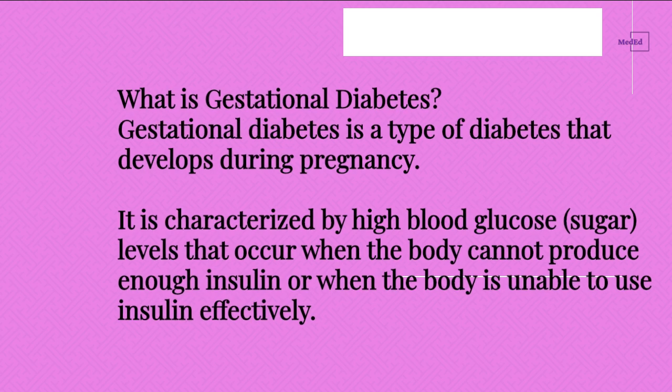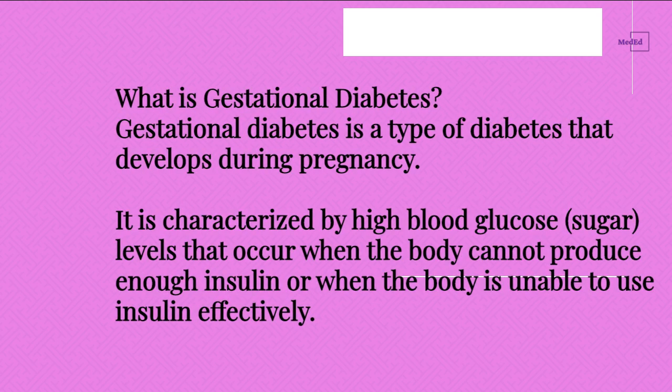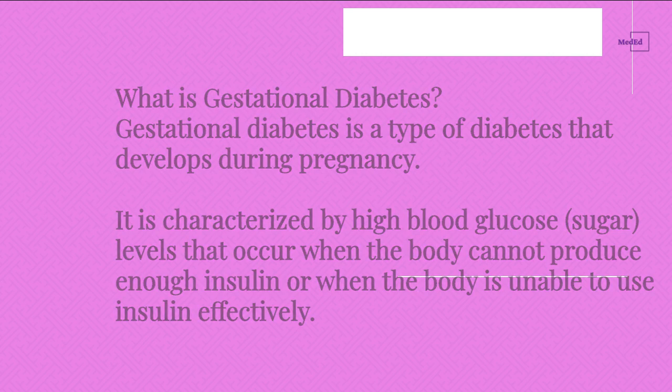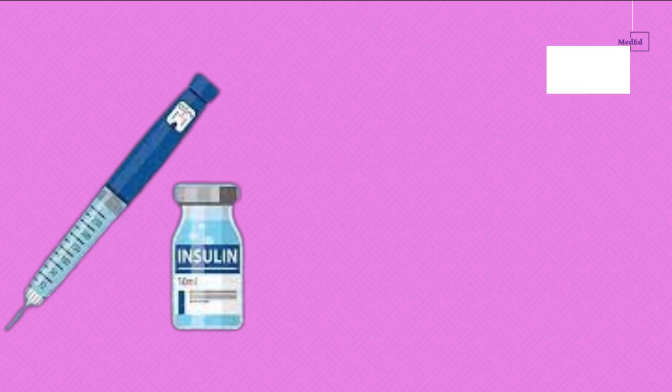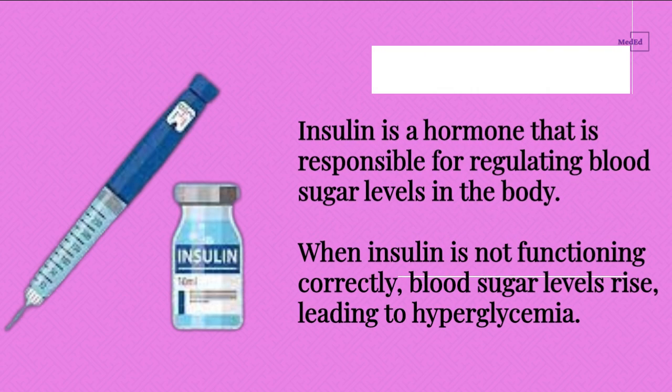What is Gestational Diabetes? Gestational diabetes is a type of diabetes that develops during pregnancy. It is characterized by high blood glucose (sugar) levels that occur when the body cannot produce enough insulin or when the body is unable to use insulin effectively. Insulin is a hormone responsible for regulating blood sugar levels in the body. When insulin is not functioning correctly, blood sugar levels rise, leading to hyperglycemia.